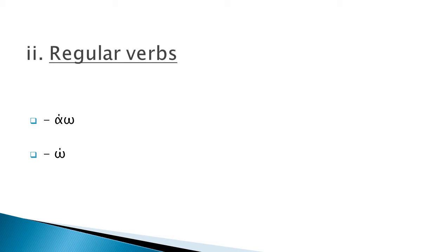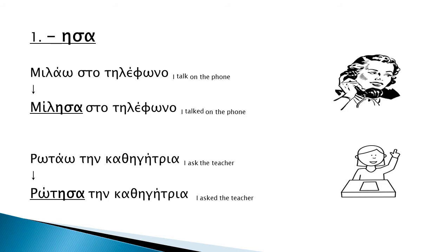In this category, verbs change usually to isa. Isa is the most common ending for ao and omega-ending verbs, thus a pretty safe option if you happen to be in need of guessing.